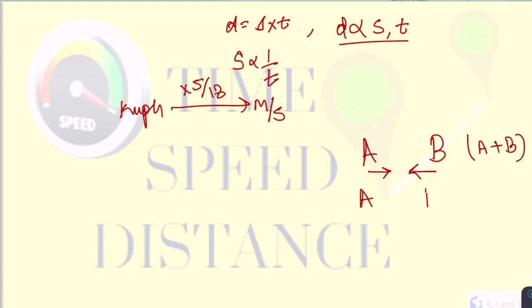And if A and B they are moving in same direction then their relative speed would be the subtraction of their speeds. We'll be using this concept of relative speed very extensively in solving our questions.